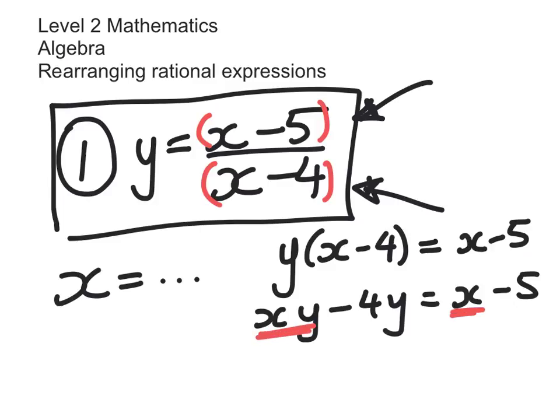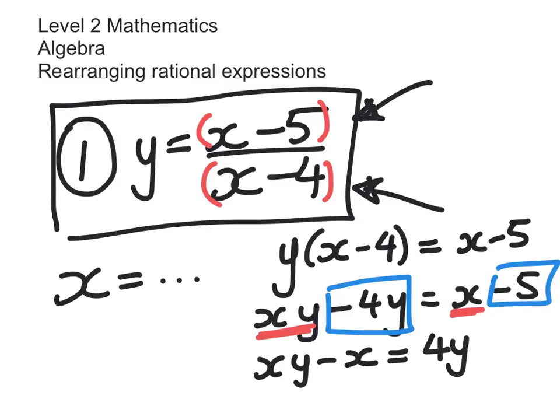We need to isolate those to one side and get everything else to the other side. Now you'll get into a system of doing this. I usually take everything with x over to the left-hand side. So I get xy minus x is equal to add 4y to both sides. So 4y minus 5.